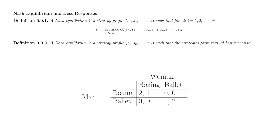We'll see later, in our discussion of mixed strategies, that underlining does not necessarily capture all of the Nash equilibria of a game the way that iterated elimination does. Boxing-Boxing and Ballet-Ballet are both Nash equilibria of Battle of the Sexes, but we'll soon see that there is in fact one more Nash equilibrium in this game.